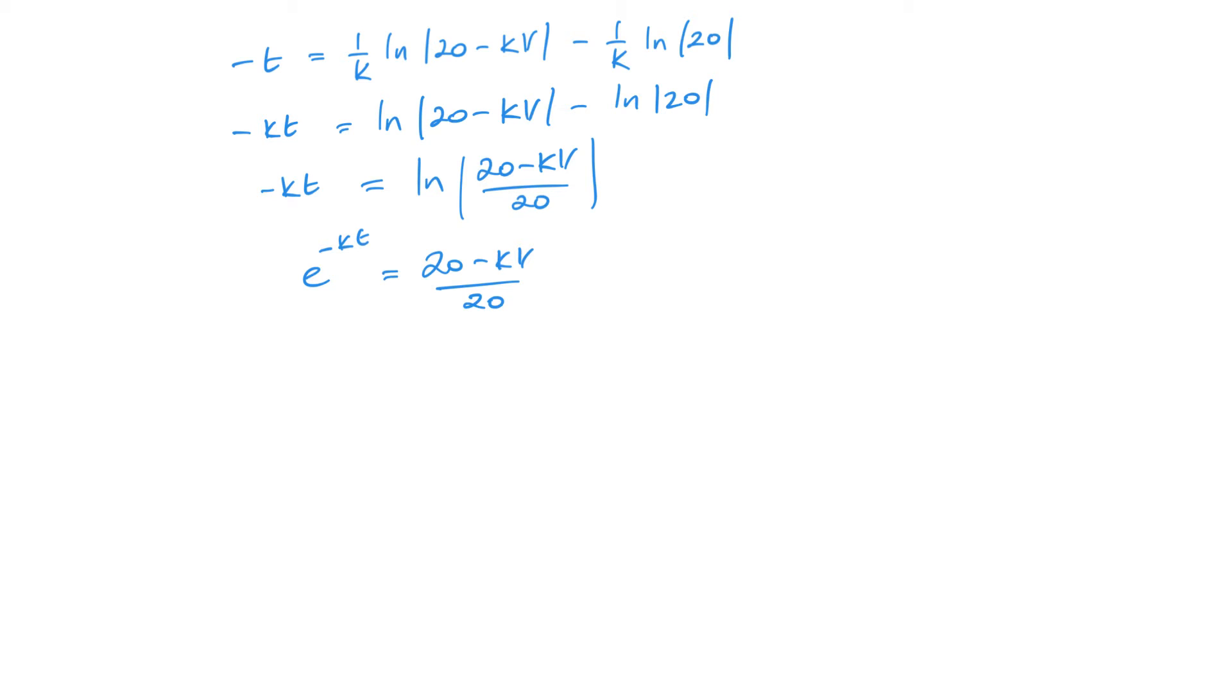We want V equals. First, let's multiply by the 20. Let's do a little change around. So, kV equals 20 minus 20e to the minus kt. And then we need to divide by k. And here's our values of A and B from the question.